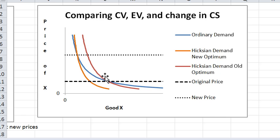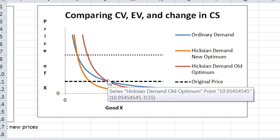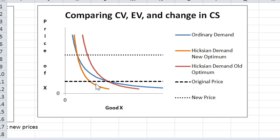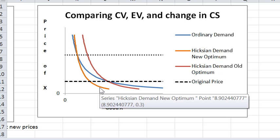And it measures just the substitution effect along the original indifference curve. This orange demand curve here measures the substitution effect along the new indifference curve.